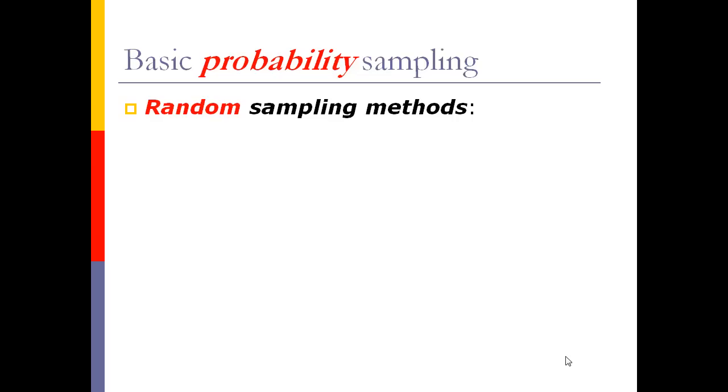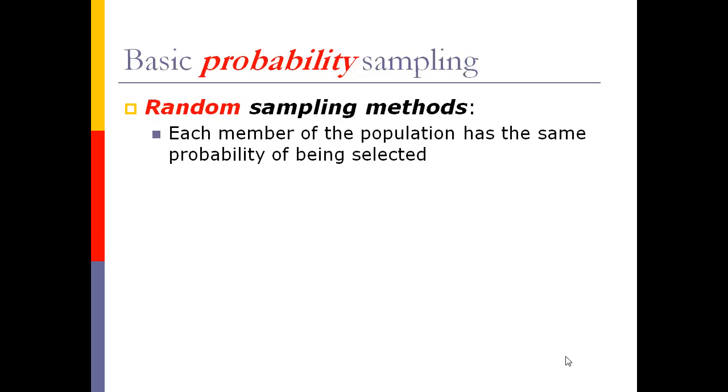Let's look at some basic probability sampling methods. Remember, probability sampling is the same thing as randomized sampling — we want some kind of randomized effect, but that means respecting some kind of probability structure or pattern. When we talk about a random sampling method, that has a particularly specific meaning: our sampling method is done in such a way that each member of the population has the same probability of being selected.